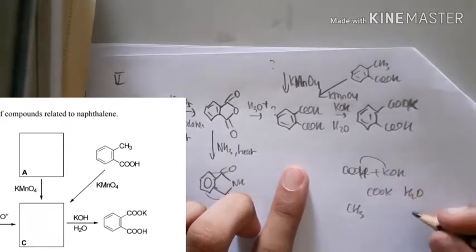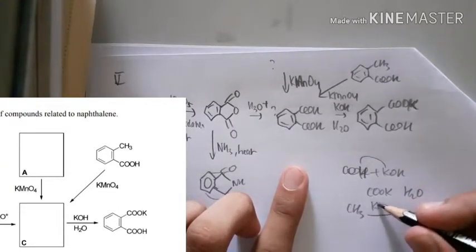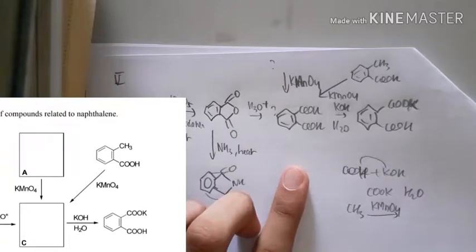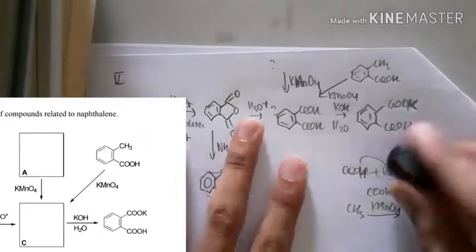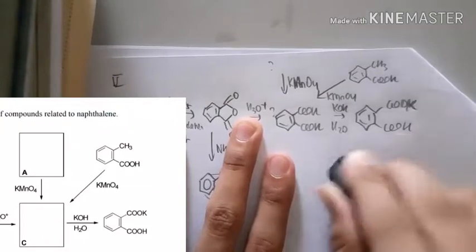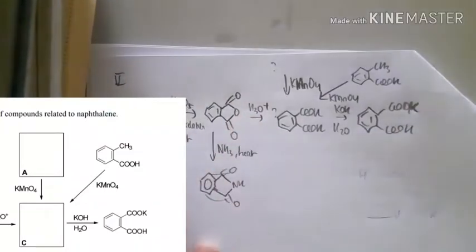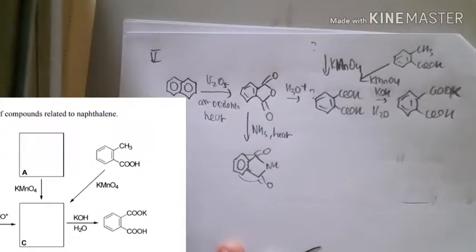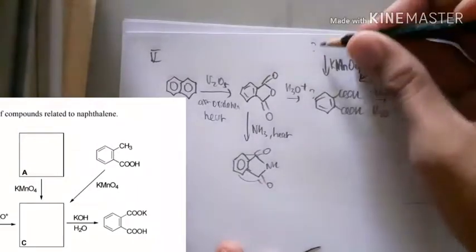Remember if you have CH3, if you have the strong agent potassium permanganate, it will turn into carboxylic acid. So the answer is the 12th option.